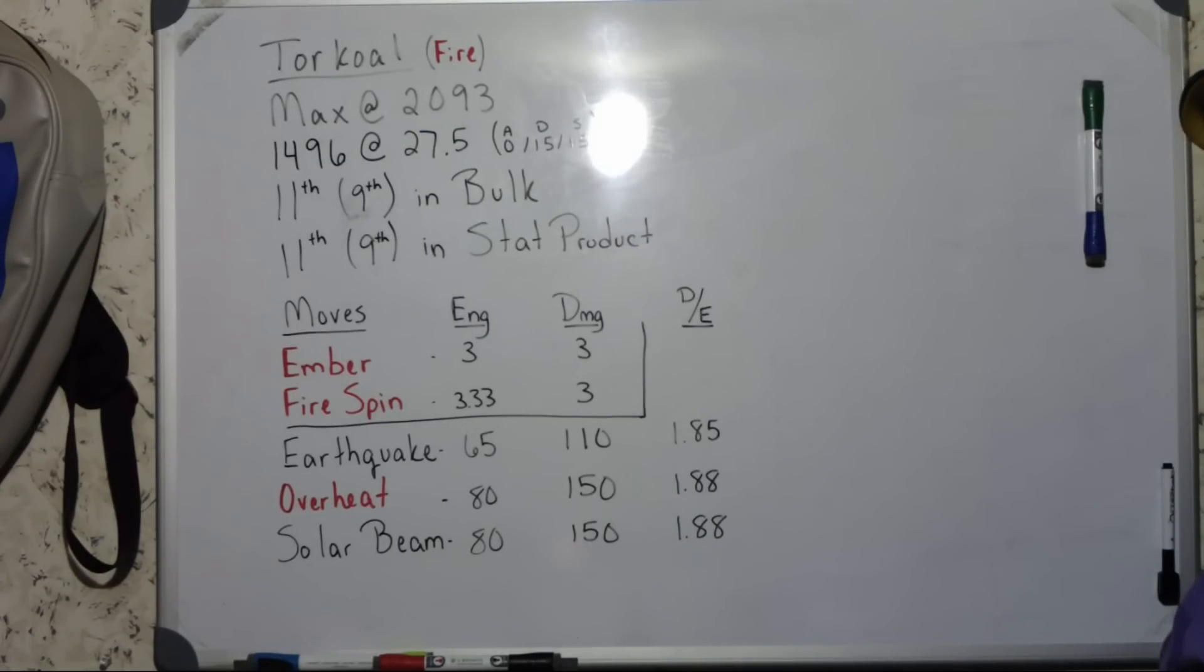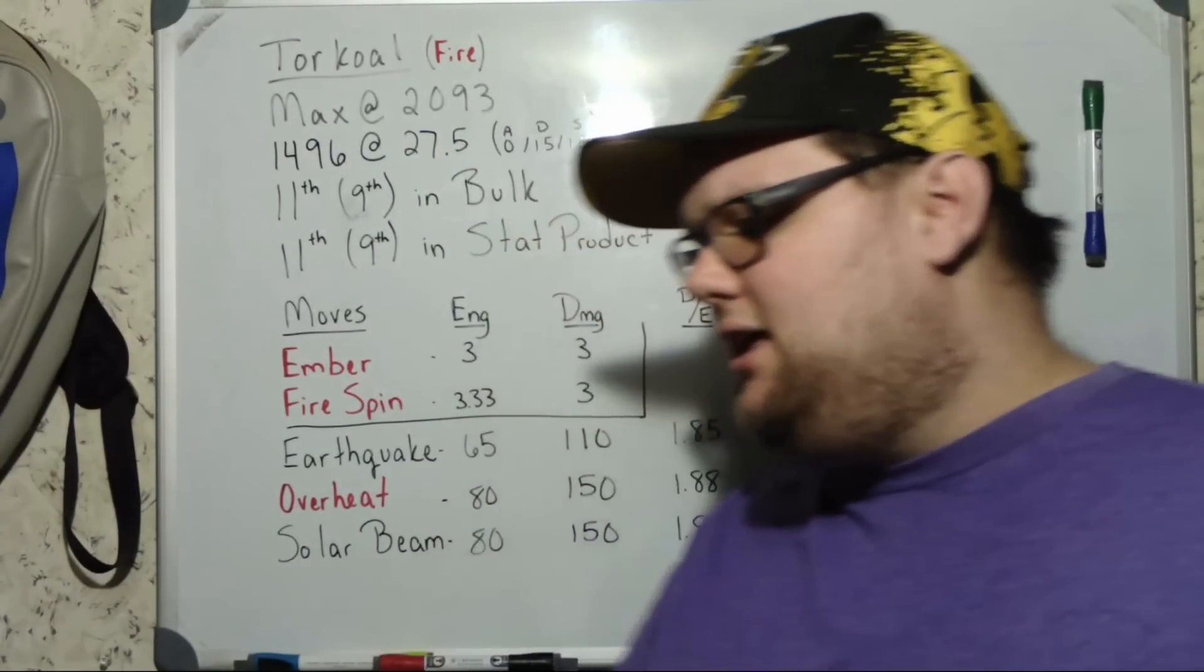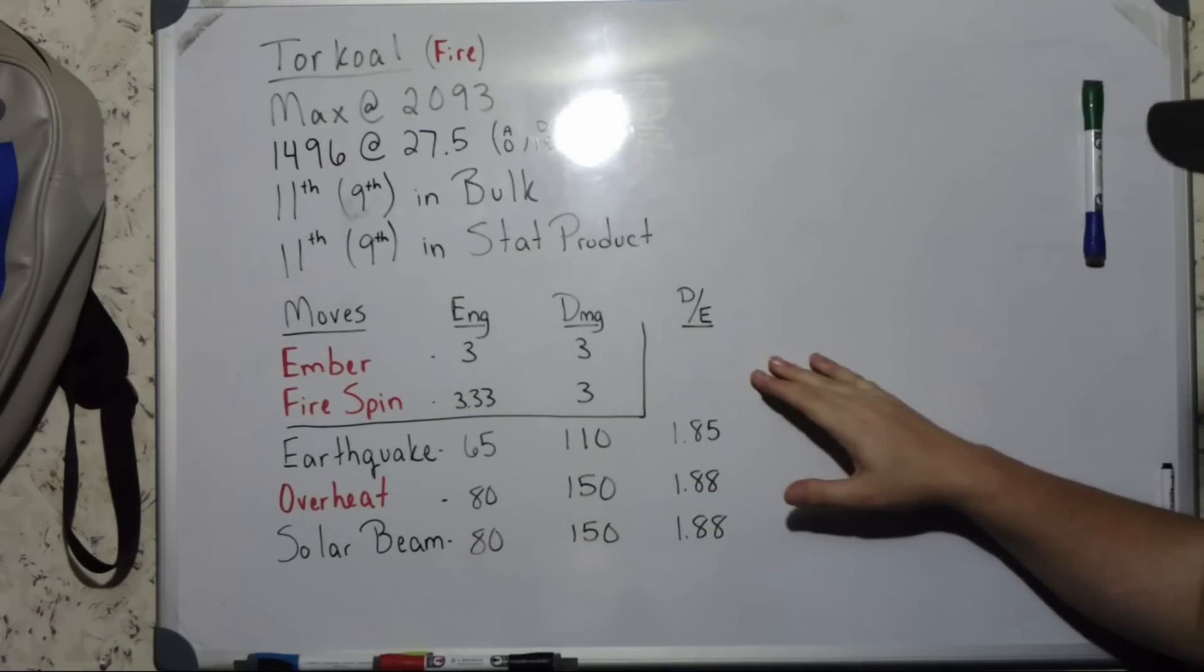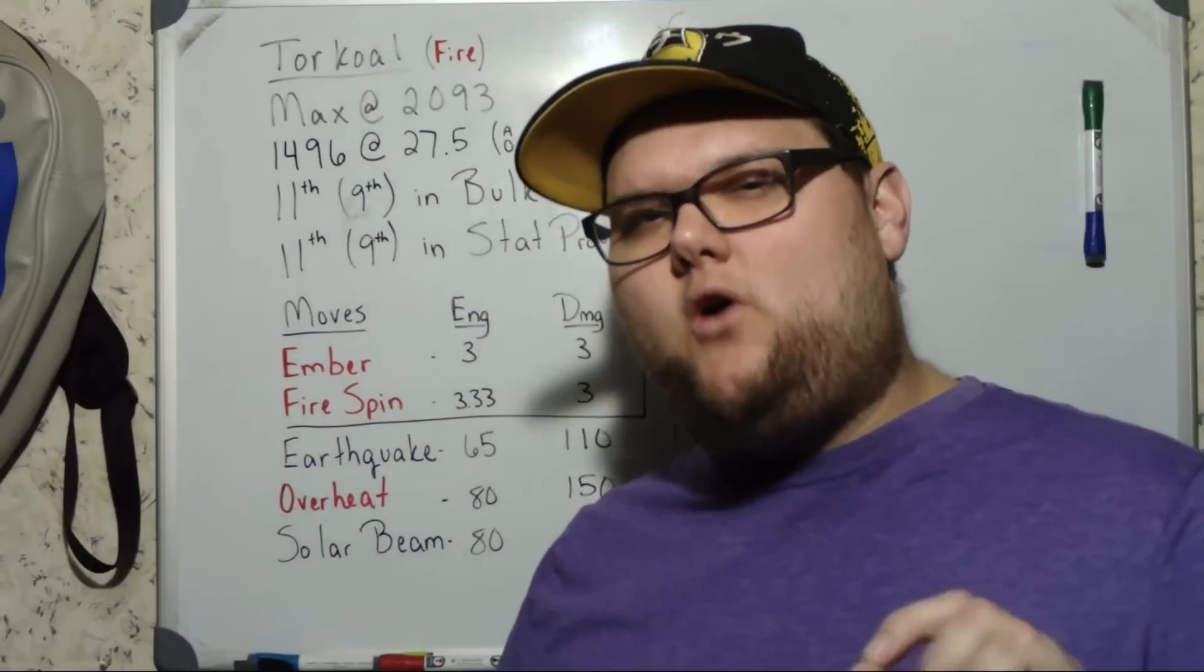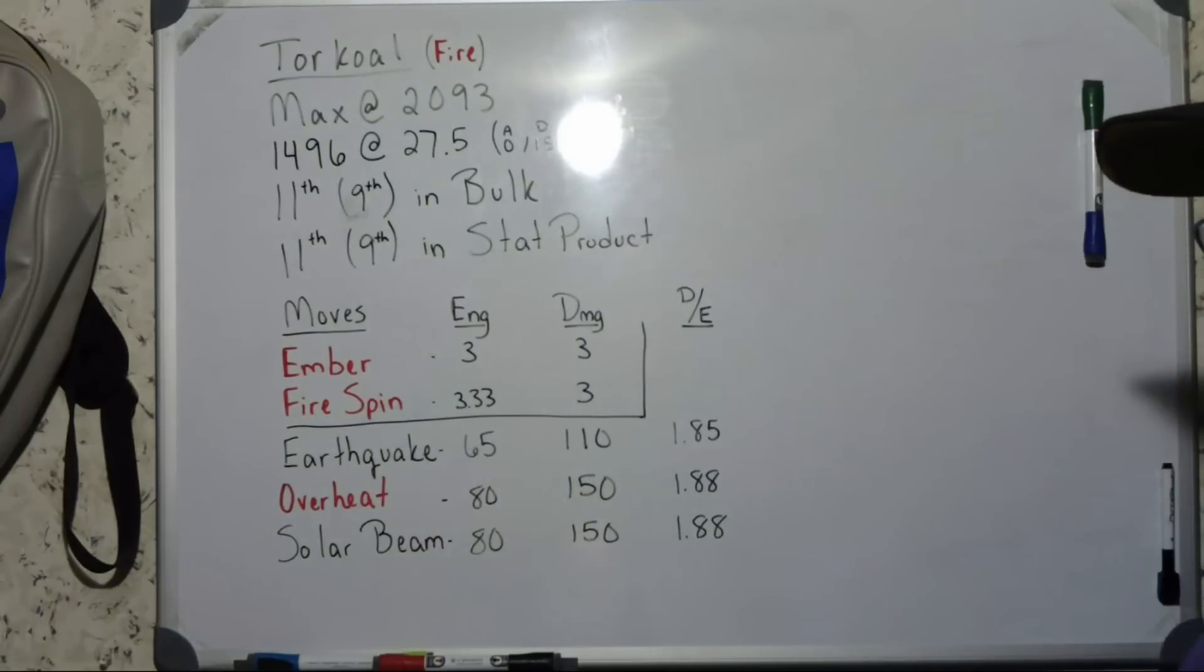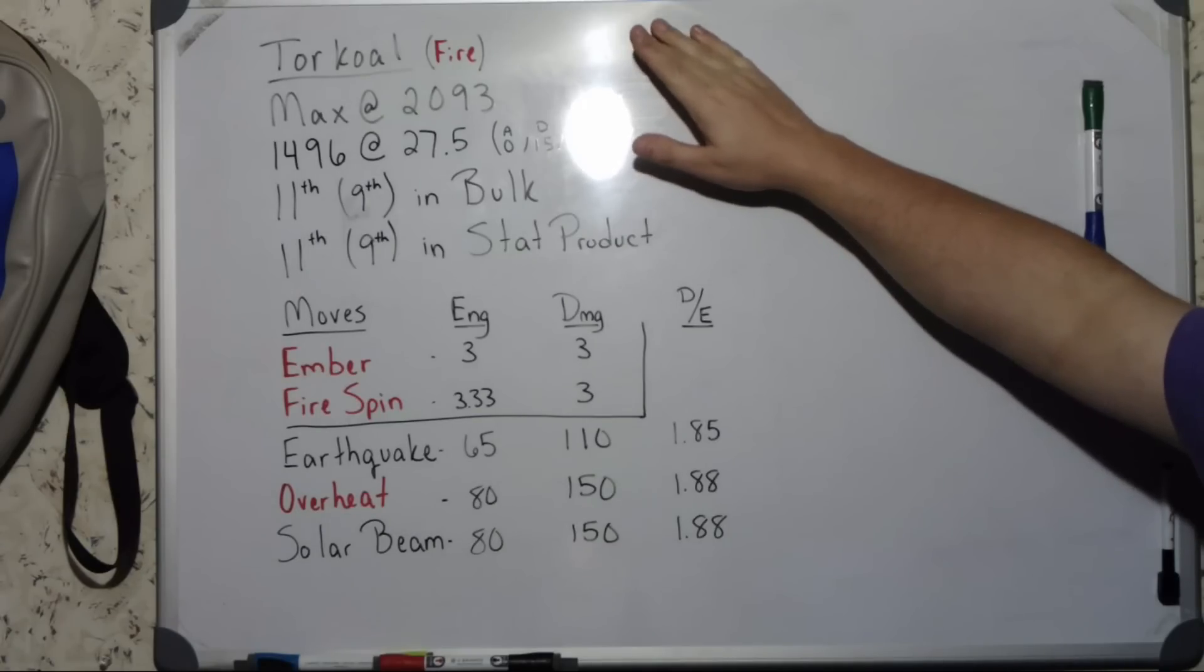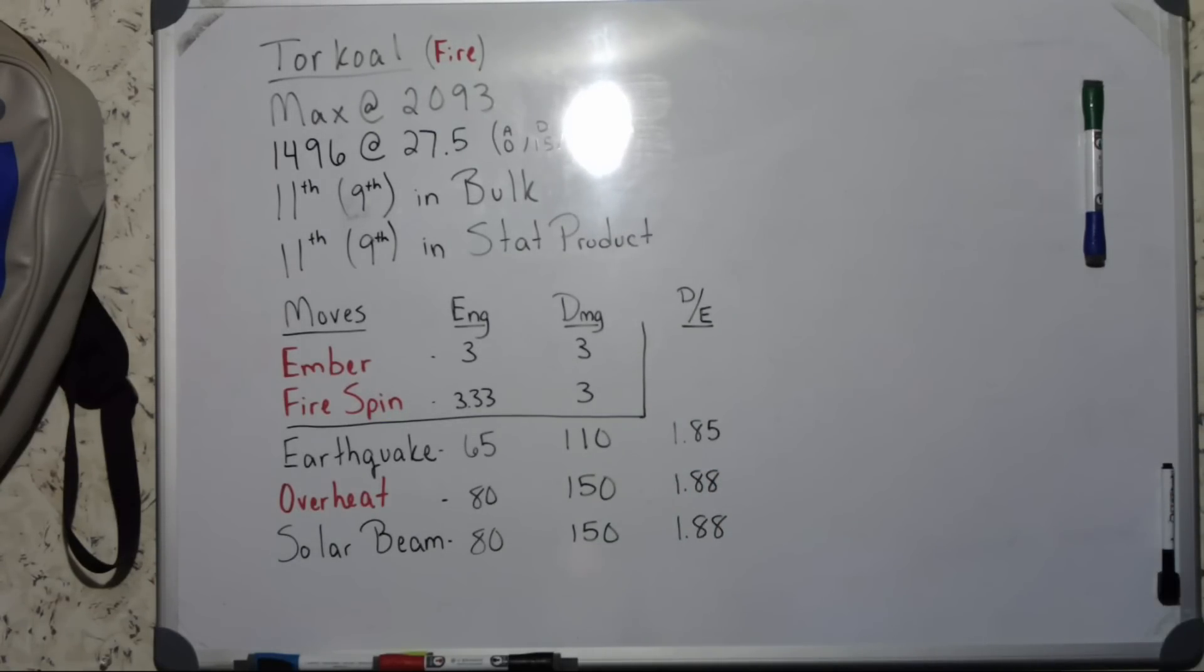What should you be focusing on with Torkoal? What should you be trying to take down? Things that are steel type like Registeel, Bronzong, and Melmetal, they all have a really hard time coming over this Fire Spin Earthquake combo. Then things that are fire type that don't have access to flying type moves, you do pretty well against those. Things like Monferno, Alolan Marowak, and Typhlosion, they all end up having a hard time getting over the neutral damage and they actually end up falling to that Earthquake.